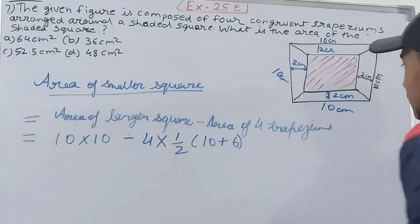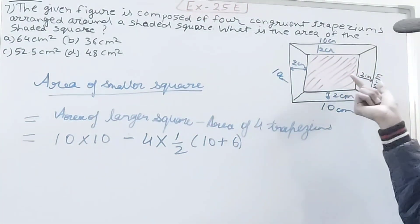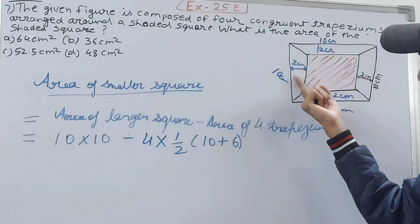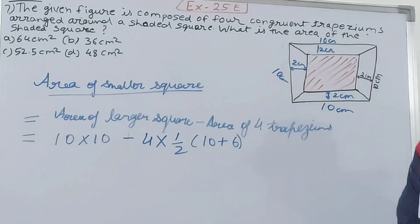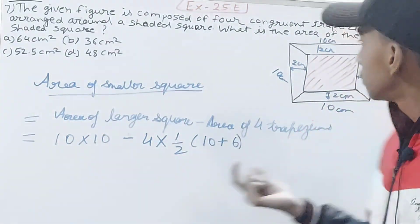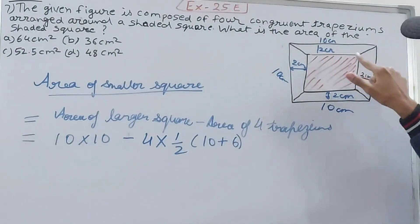That's 10 and then plus 6. How did I get 6? See here it is 10 centimeters, this is 2 and this is 2, so 10 minus 2 minus 2 is 6. So that means this side is of 6 centimeters.